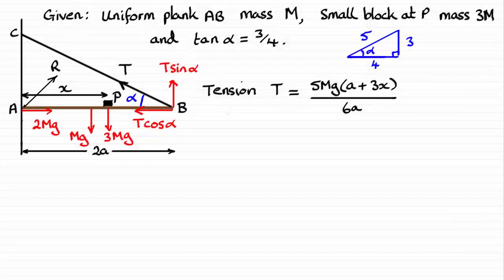Now in the next part of this question, we're told that the force exerted on the plank at A by the wall acts in a direction which makes an angle beta with the horizontal. So that force will be called R, and this angle here is beta. And we're now being asked to find the value of tan of that angle beta.